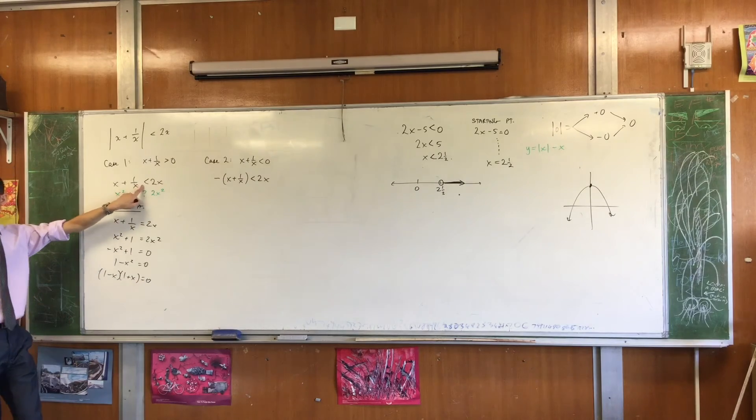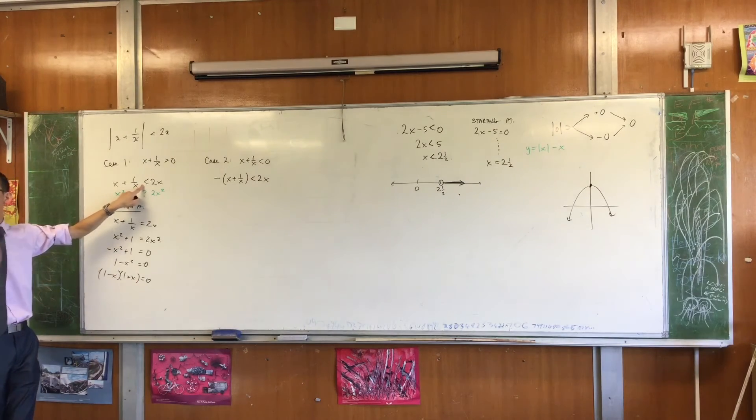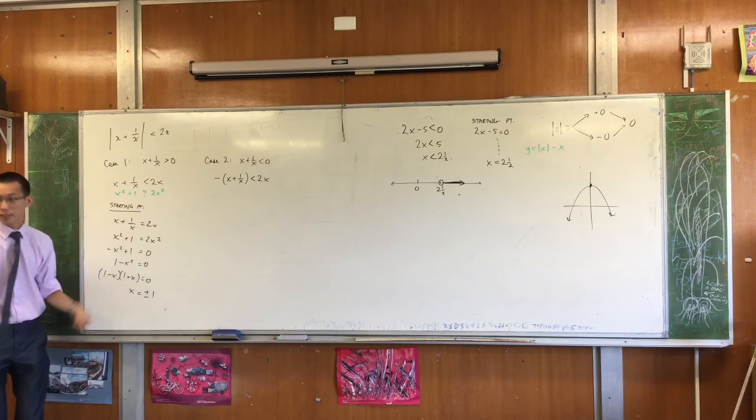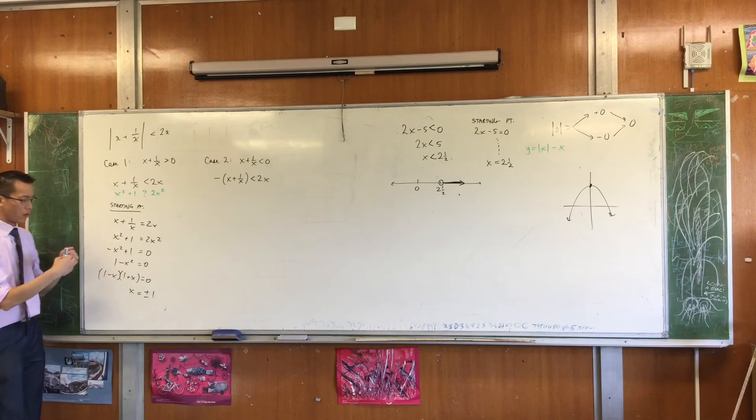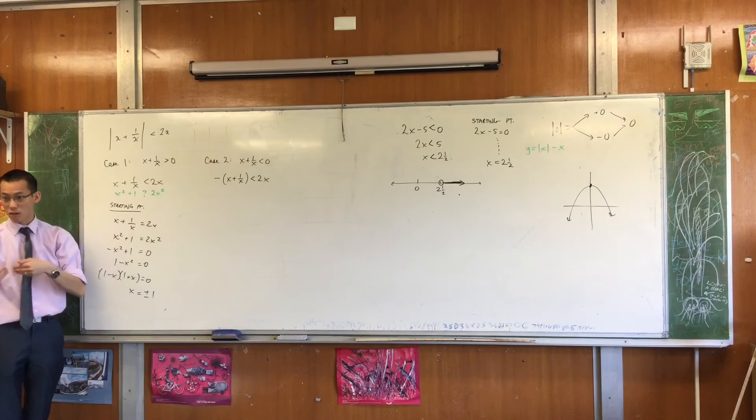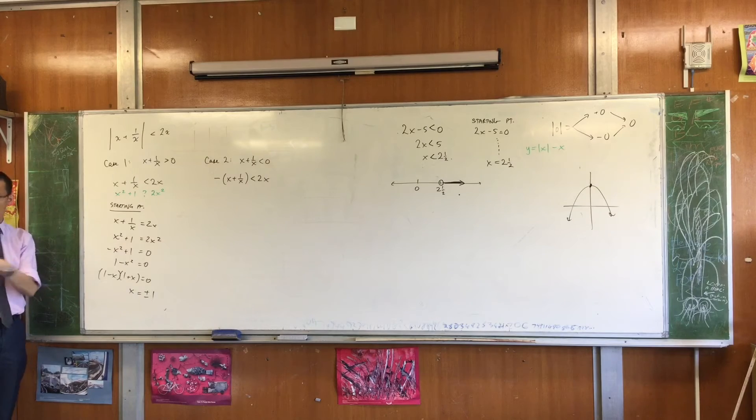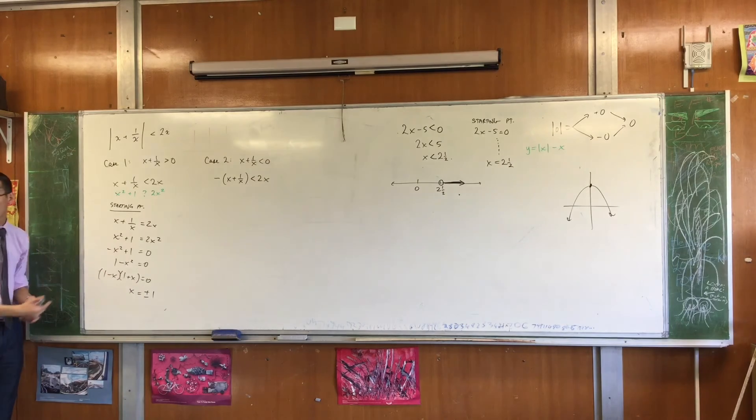So, what this means is, see this thing? It's true somewhere. Where is it true? Well, the places where it's going to start from are plus and minus 1. Okay? So on one side of 1, and on the other side of 1, on one side of negative 1, on the other side of negative 1, I'm going to find out where it's true or not. Okay?